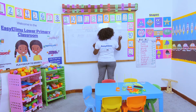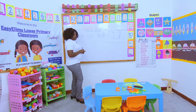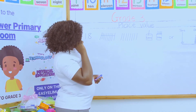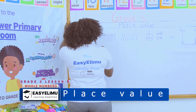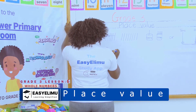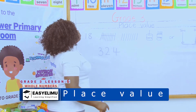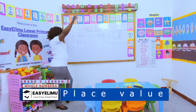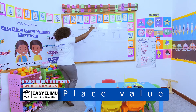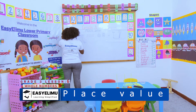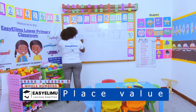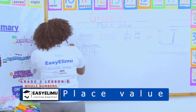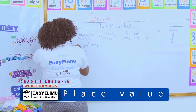Now I want to introduce another place value, which is hundreds. We want to represent a three-digit number such as three two four. Rule number one: we start counting from the right hand. So the digit four is in the ones place value, followed by tens, and lastly hundreds.